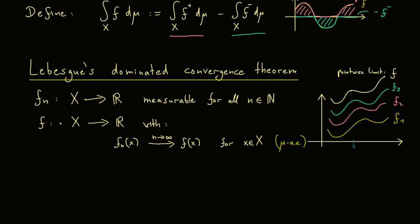And now you could ask a lot of questions. Are the functions fn integrable? So do they lie in our L1 space? And if they do, what about our pointwise limit function f then? And more importantly, can I swap the limit and the integral? Or in other words, can I pull in the limit into the integral? Now, Lebesgue's dominated convergence theorem says yes to all of these questions.